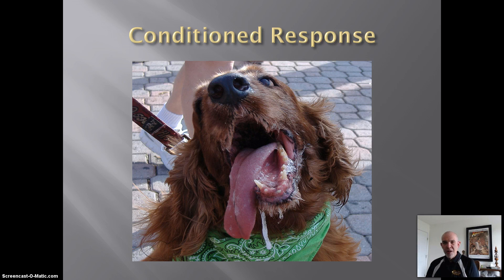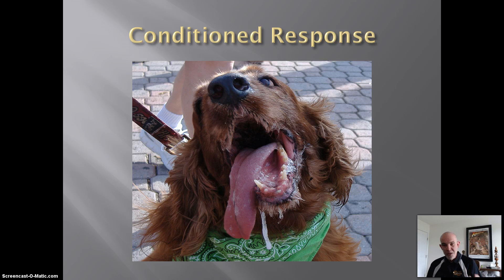That ends Part 1. We've defined learning, classical conditioning, the US, the UR, the CS, and the CR. I know there's a whole lot of abbreviations going on here — you'll have to read and study this some more. We've got more coming up in Part 2, so see you then. Bye-bye.